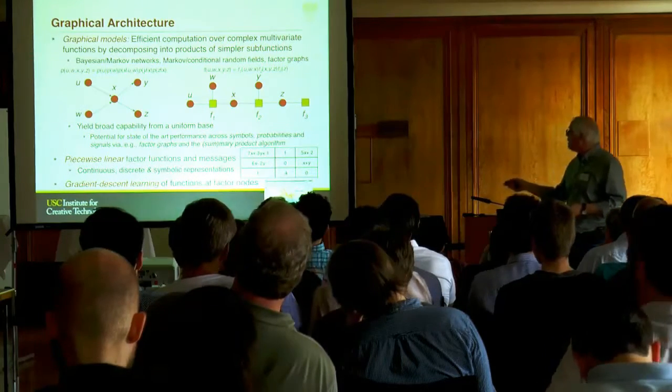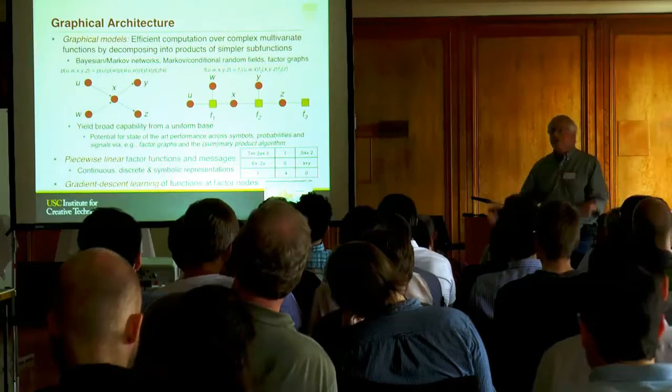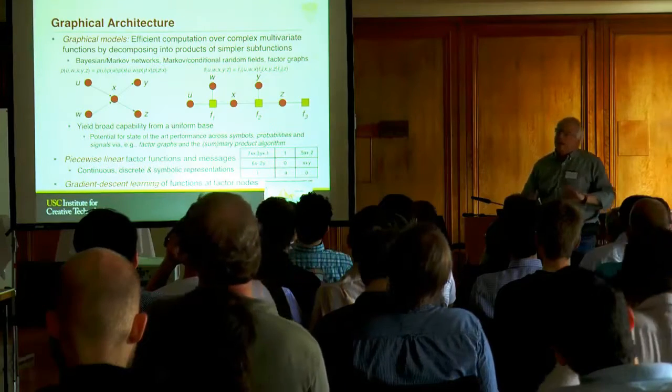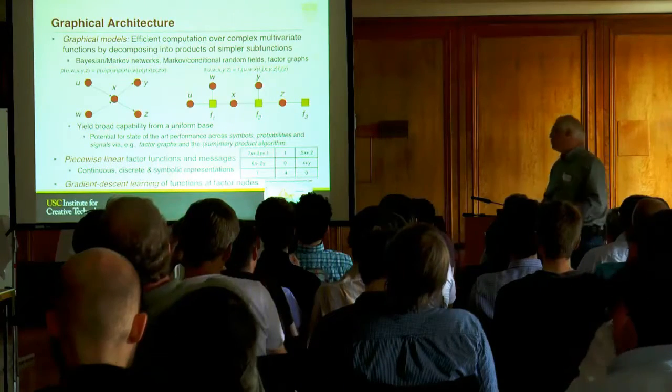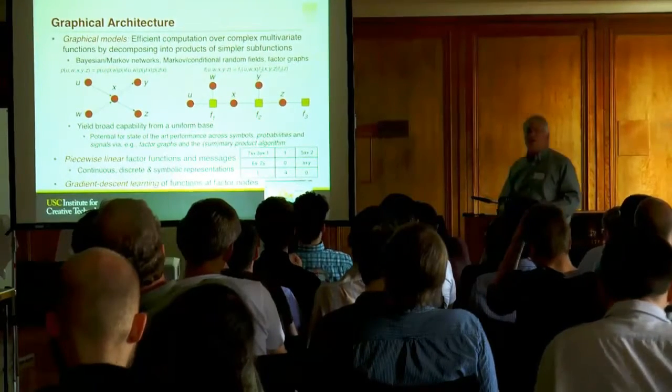Gradient descent learning is learning at these factor functions based on the messages coming back in them. Essentially, the messages out of them drive behavior, messages into them drive learning. It ends up with something like backprop, but it's not quite the same.